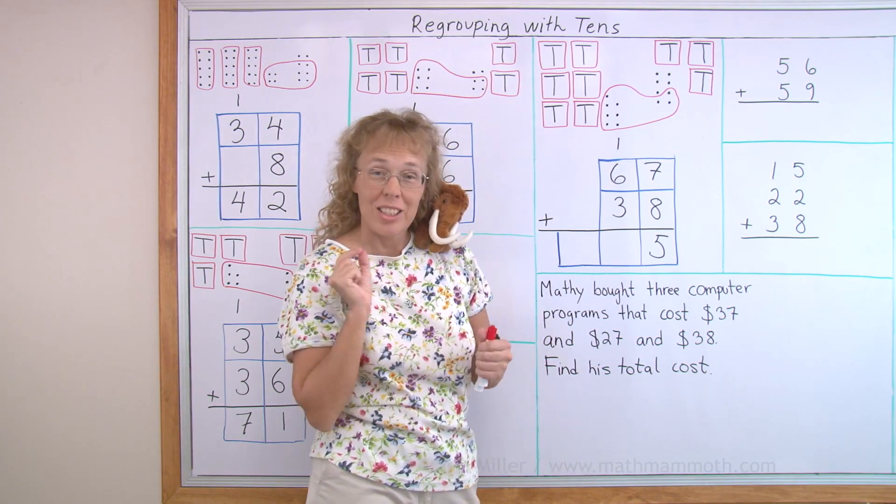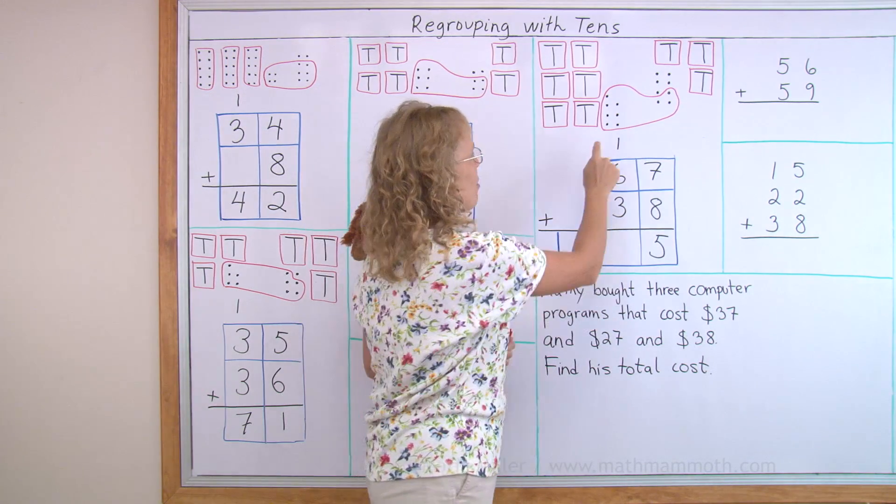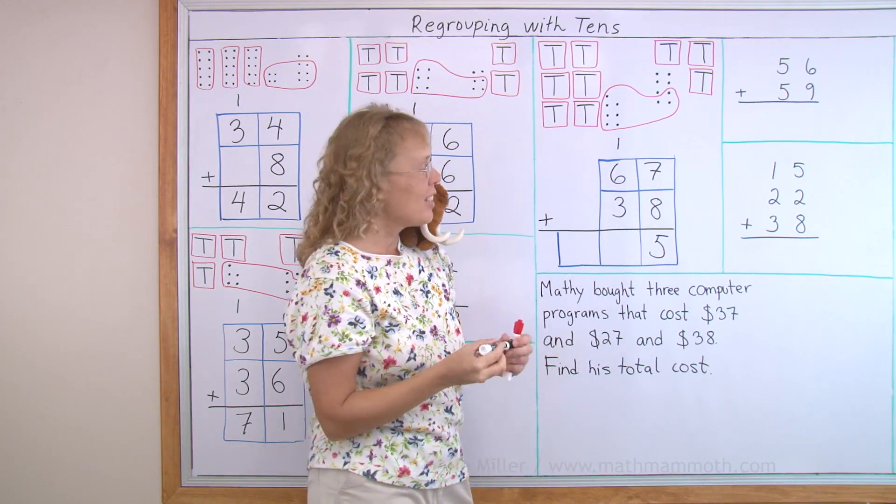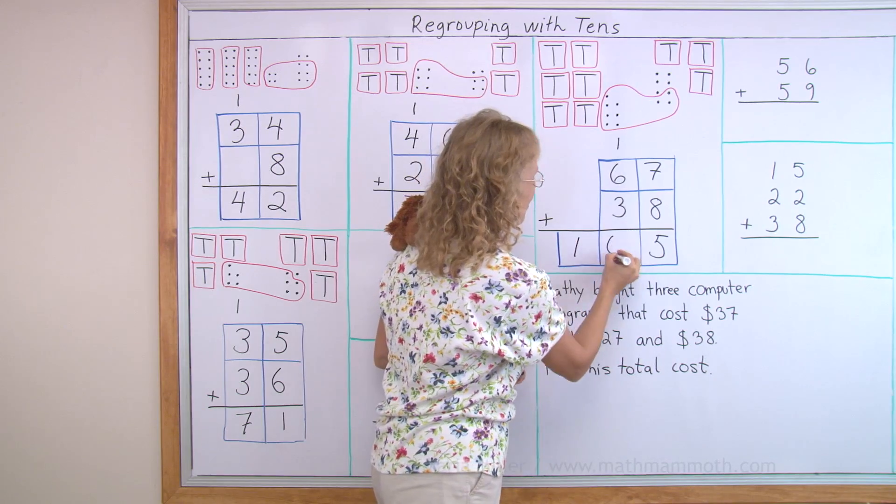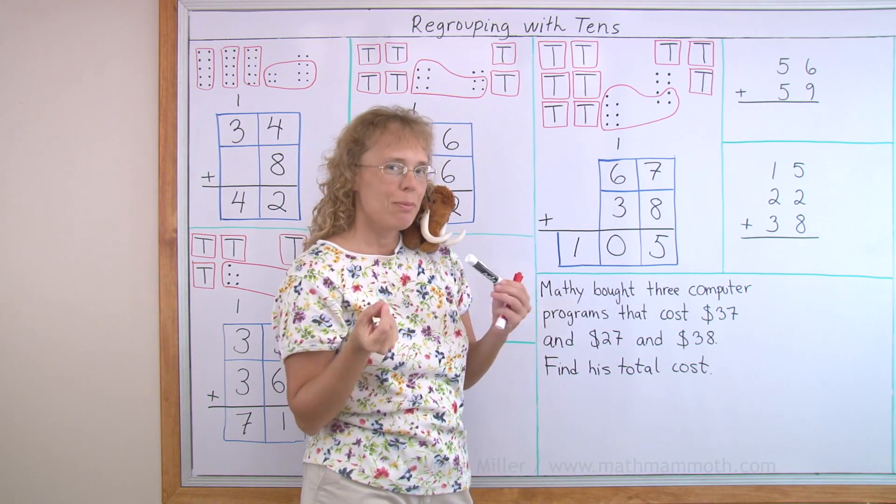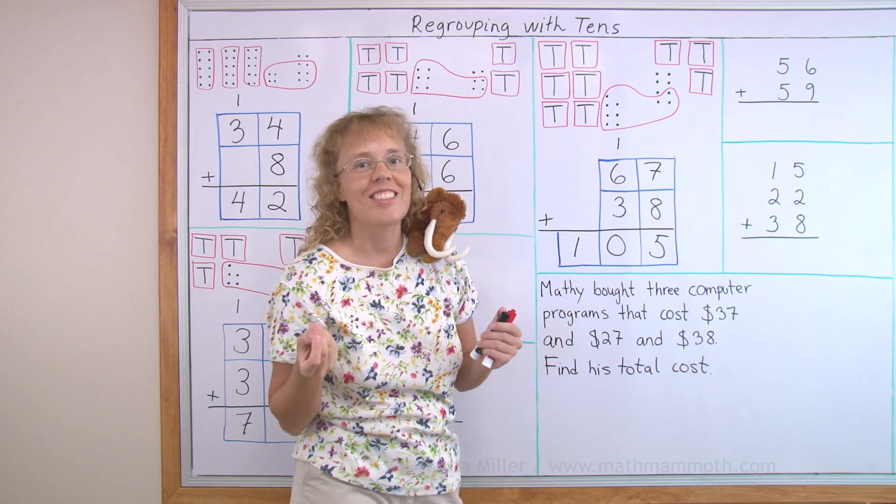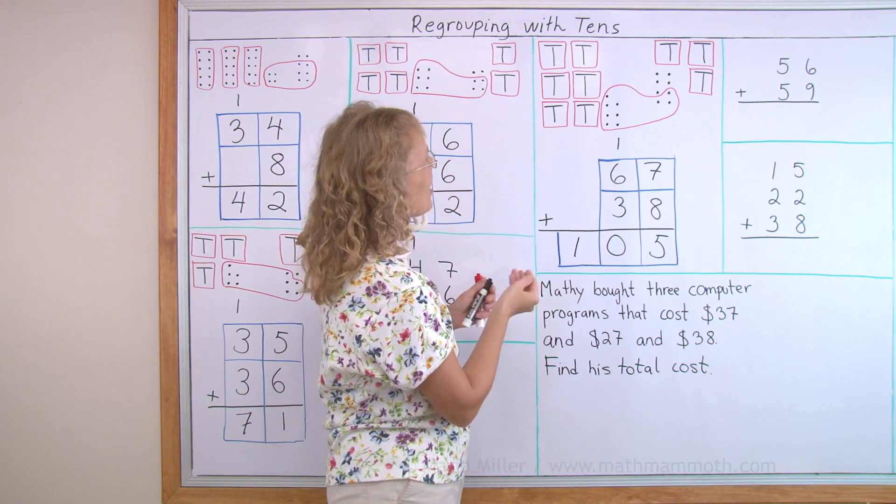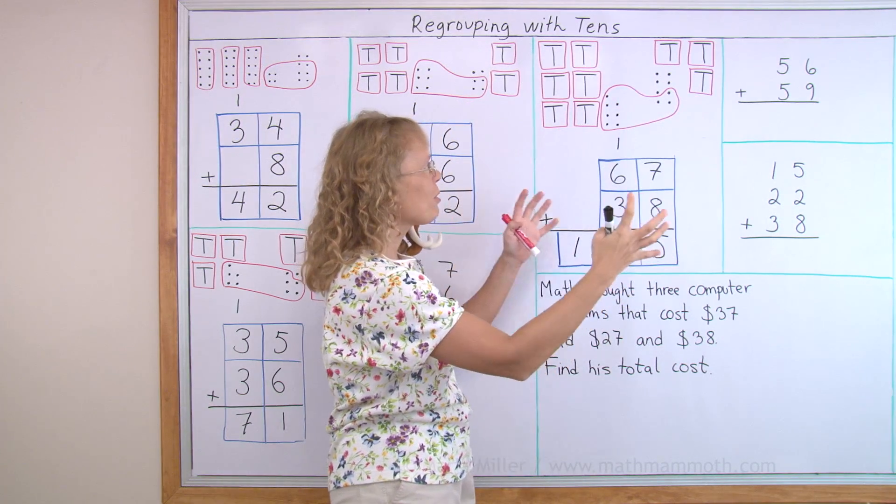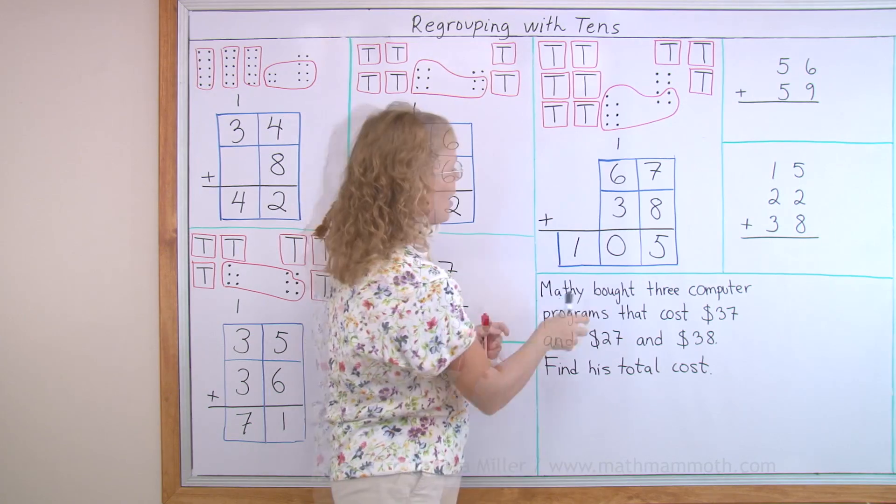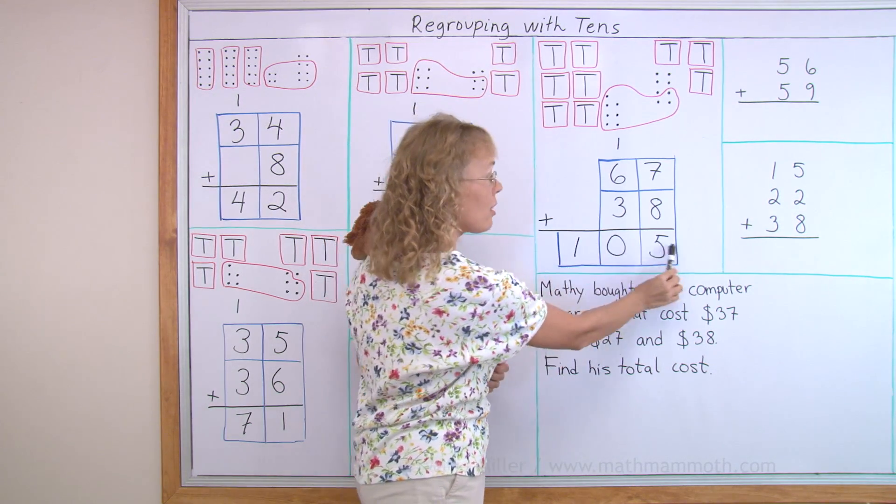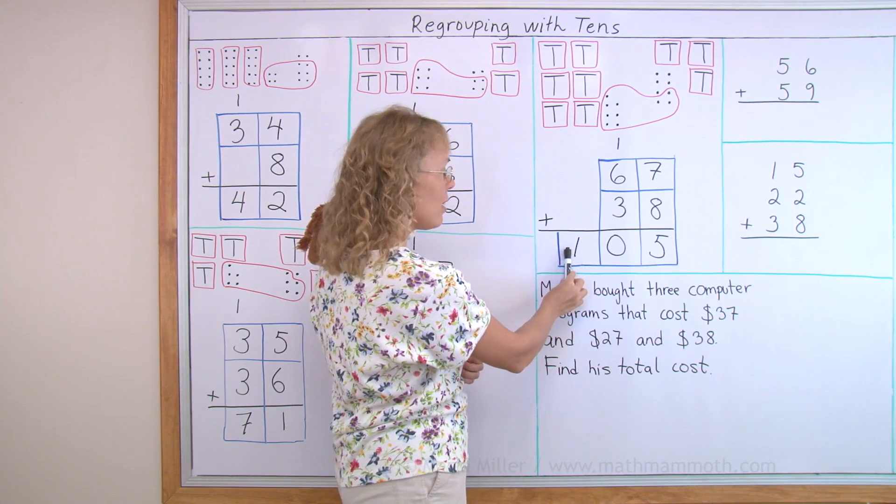But now let's look at all those tens. One plus six plus three equals ten. So I just write it here. Ten. But actually, ten tens makes what? A hundred. So actually, these ten tens here, if I could, I could put them all together into one big hundred. And here, it is written just like a ten. But then you see the number, that the number actually has one hundred and five.